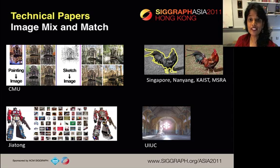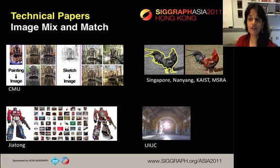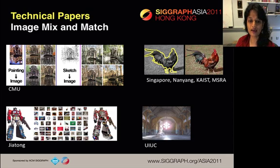In the Image Mix and Match session, we have a paper that learns cross-domain image similarity metrics based on what they call data-driven uniqueness — this metric enables matching across images, paintings, and sketches. A new colorization method that uses internet photos and image filtering for accurate color transfer. A paper that introduces a technique to create collages from internet images using cutouts. And a method to realistically insert synthetic objects into legacy photographs without access to the scene.